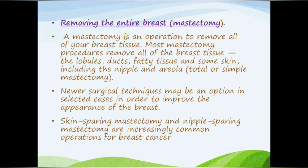The next surgery is removing the entire breast, called a mastectomy. A mastectomy is an operation to remove all of your breast tissue. Most mastectomy procedures remove all of the breast tissues — the lobules, ducts, fatty tissue, and some skin including the nipple and areola — which is called a total or simple mastectomy. Newer surgical techniques such as skin-sparing mastectomy and nipple-sparing mastectomy are increasingly common operations for breast cancer.